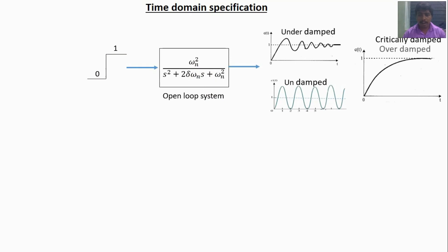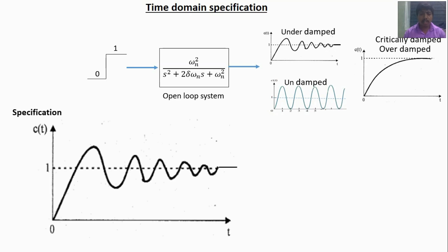These response types are based on the value of ζ (damping ratio). These concepts are already explained in the response of second-order system video — the link is provided in the description. For now, I will take an underdamped system for the calculation of time domain specifications.